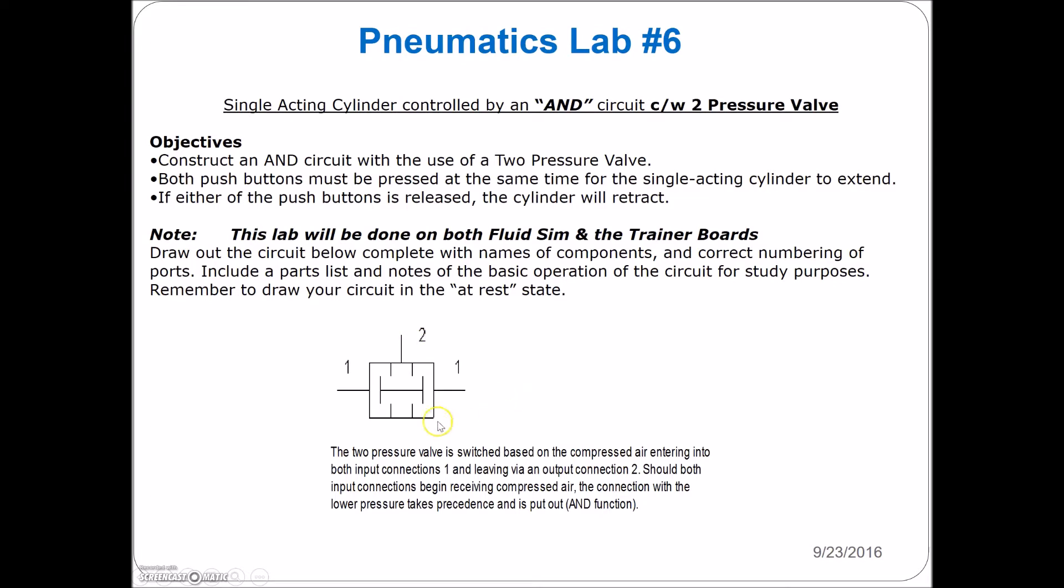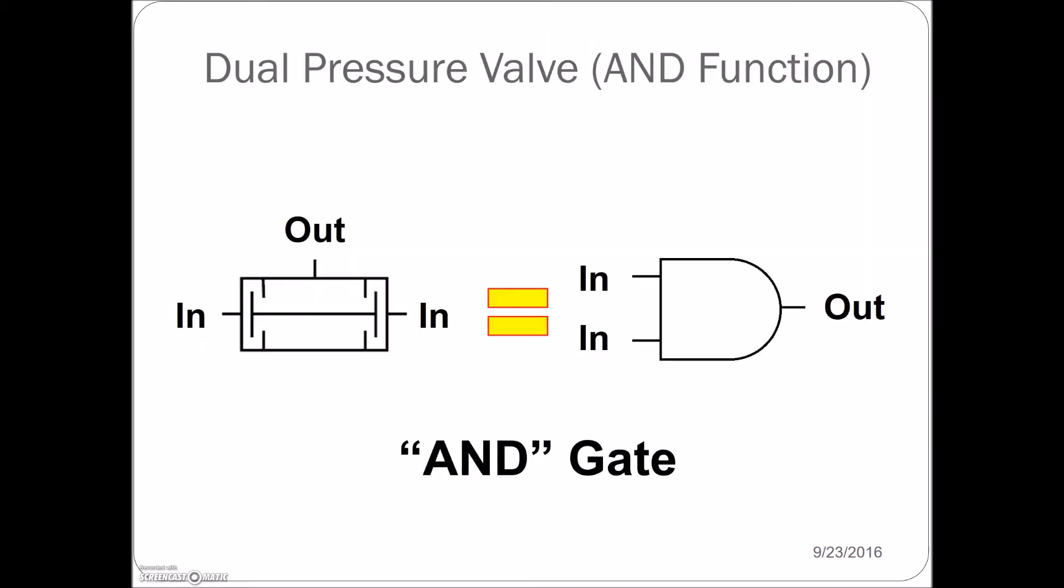The way that you'll distinguish which one this is in the lab is embossed on the front—it'll have this exact image of the end valve. The other name for this is the two-pressure valve, which needs two pressures of basically equal value before the output will actually happen. Pushing both push buttons at the same time will allow the single-acting cylinder to extend. If either push button is released, the cylinder will retract. Basically, this symbol corresponds to our AND gate.